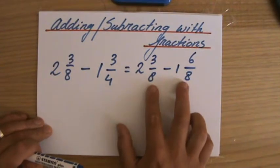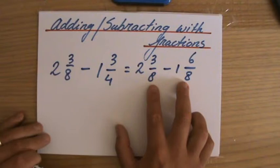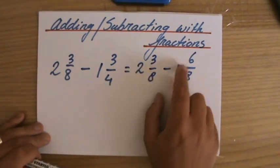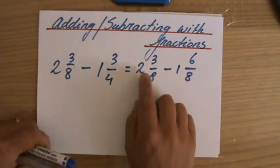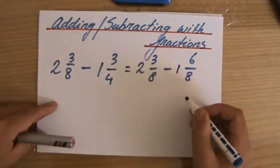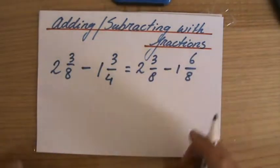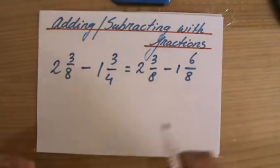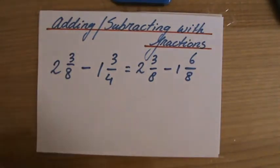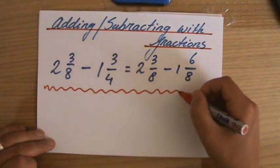I explained that in previous videos in more detail, but then in the end, 2 3/8 minus 1 6/8, 2 minus 1 is 1, but then 3/8 minus 6/8, we're going into the negatives and then some of you will get confused. So perhaps in this case it would be wiser to use that other strategy I gave to you.